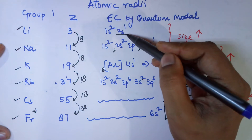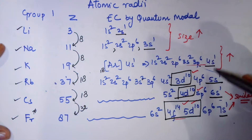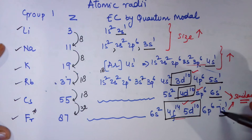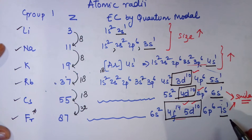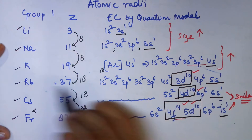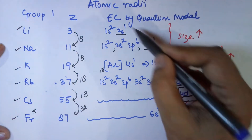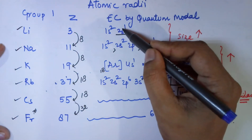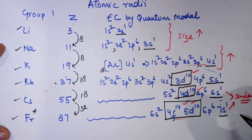Down the group, the principal quantum number is increasing from 2 to 3 to 4 to 5 to 6 to 7. Francium has the highest principal quantum number of 7, so it has 7 shells. Cesium has 6, rubidium has 5, potassium has 4, sodium has 3, and lithium has 2. As the principal quantum number increases down the group, size is expected to increase.